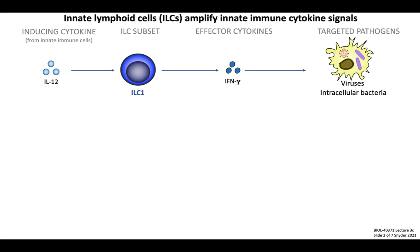Let's first discuss ILCs, whose main effector function is to amplify and tailor cytokine signals which they perceive from other innate immune cells in their tissue environment. ILCs can be separated into three separate subsets, based on the cytokines that they are induced by, the effector cytokines that they produce, and the types of infections those cytokines correspond to. ILC1s are activated in response to IL-12 and primarily produce a type 2 interferon called interferon gamma, which is notably different than the type 1 interferons introduced so far. For now, let's associate interferon gamma with defense against intracellular pathogens, such as viruses and intracellular bacteria.